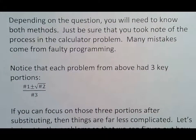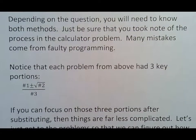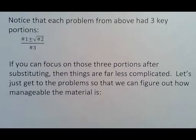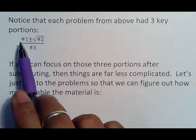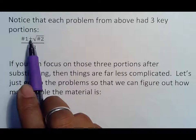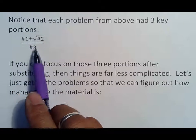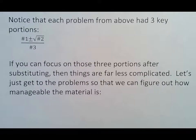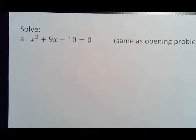You then do the same thing: 5.3 minus square root of 11.7, hit equals first and then divide by 4.6. Whatever note you need to make for yourself, make sure you write that down because that is going to guarantee that you are getting the right answer no matter what. You want to make sure you understand: type in the top, hit equals, then divide by the bottom, because if you don't, the order of operations is going to throw off your answer and make everything wrong. Depending on the question, you'll need to know both methods. Just be sure you took a note of the process in the calculator problem. Many mistakes come from faulty programming. Most of the issues that students have whenever they ask questions come from the programming of the calculator.